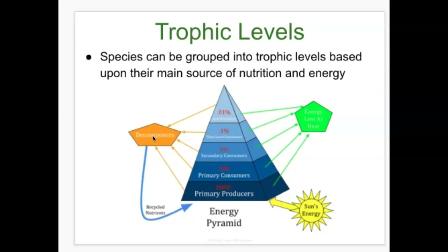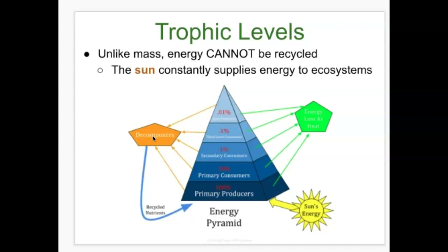Unlike mass, energy cannot be recycled, and the sun constantly supplies energy to ecosystems. Our planet is a closed system with respect to resources, with two exceptions: it is an open system to sunlight, which enters daily, and at night, thermal energy escapes into outer space.